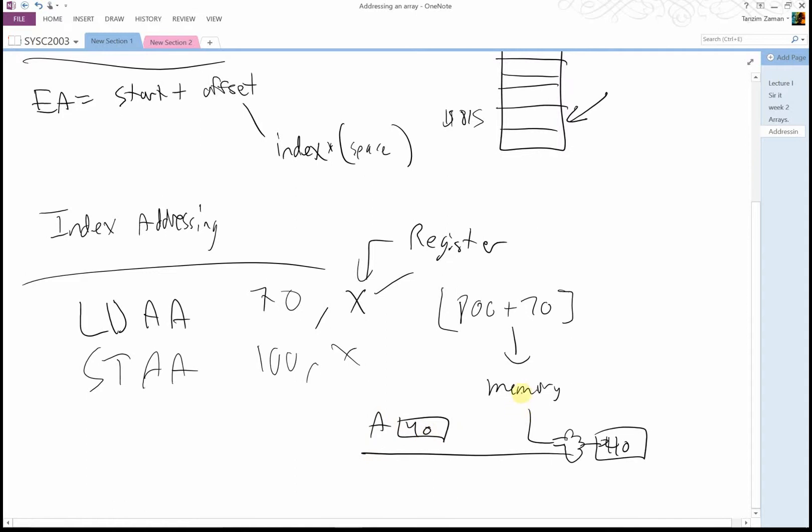All right now what if I want to store something at a certain index. Well you use the store command and it's the exact same way but opposite. So you take what's in A, you add these two and you grab it from A and put it into the combination of x plus 100.